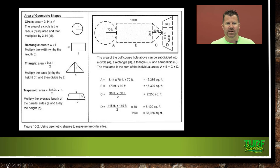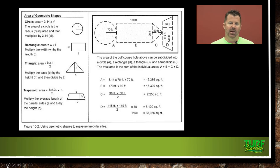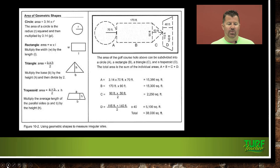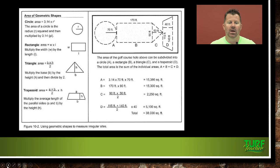Let's do a review of basic geometric shapes. The area of a circle is pi r-squared, where pi is 3.14 and the radius is half the diameter. The area of a rectangle is length times width. The area of a triangle is base times height divided by 2. For a trapezoid, it's A plus B divided by 2, multiplied by the height. Note where letters B, A, and H appear in these formulas.